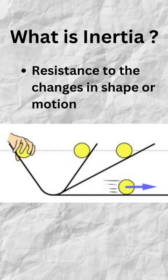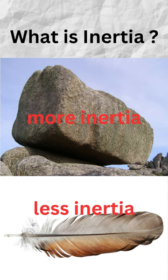The amount of inertia depends upon the mass and shape of the body. For example, a heavy rock has more inertia than light feathers because of its greater mass.